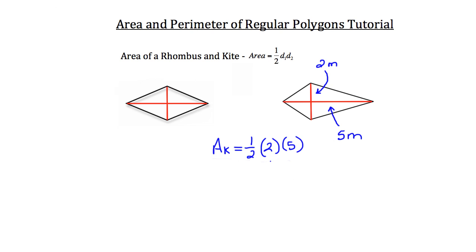Two times five is ten, and half of ten is five. So the area of this kite is equal to five square meters.